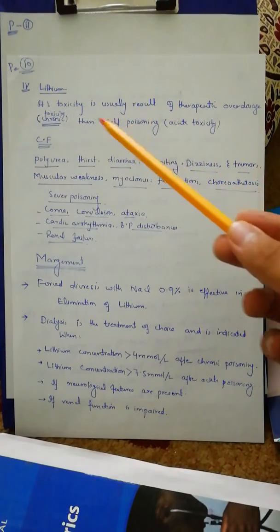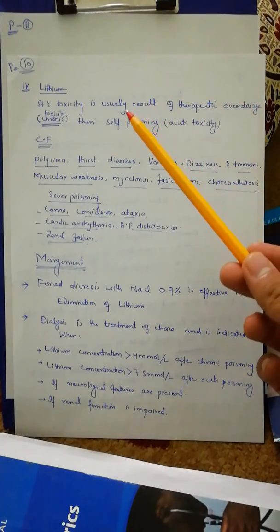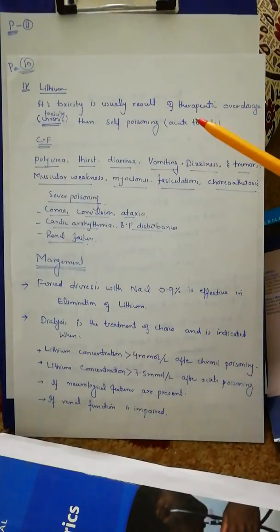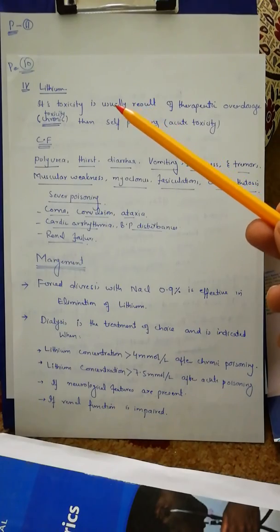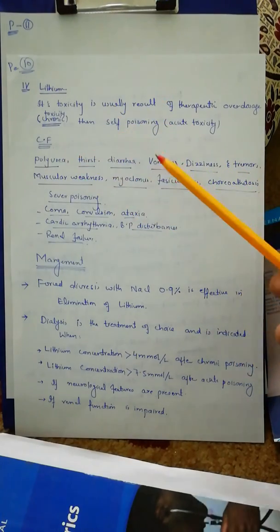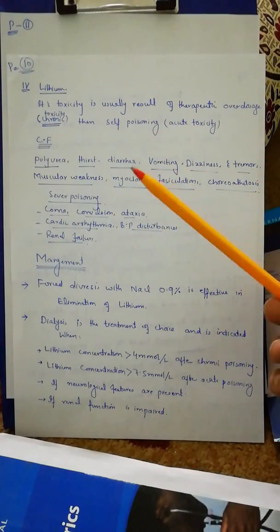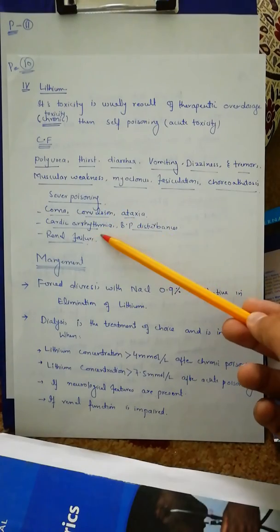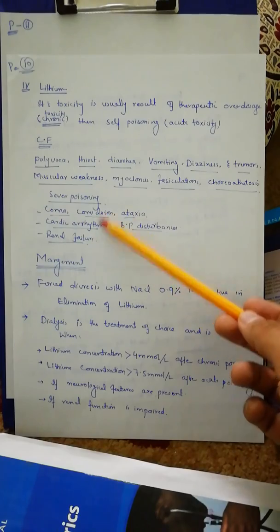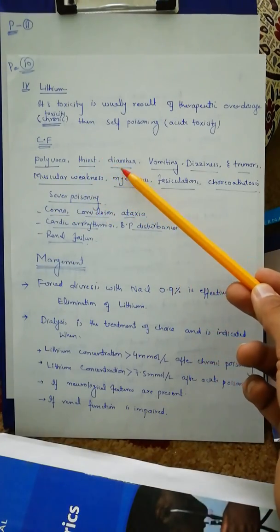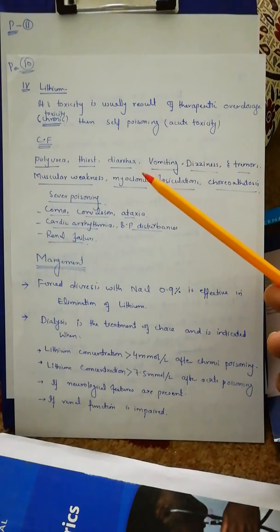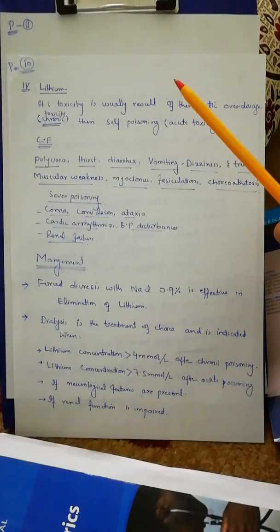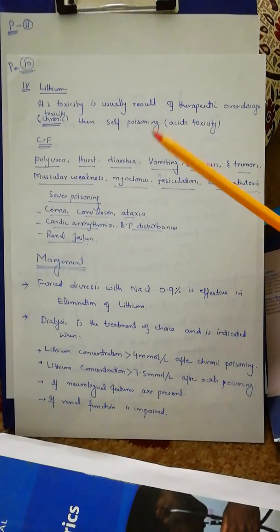Lithium is used in bipolar disorder. Its toxicity usually results from therapeutic overdosing and chronic toxicity rather than acute self-poisoning. Clinical features of lithium poisoning include: polyuria, thirst, diarrhea, vomiting, dizziness, tremors, muscular weakness, myoclonus, fasciculation, and choreoathetosis. In severe poisoning: coma, convulsion, ataxia, cardiac arrhythmia, blood pressure disturbance, and renal failure. The patient will also typically give a history of bipolar disorder and long-term use of lithium.